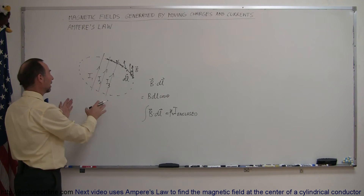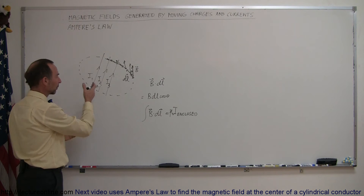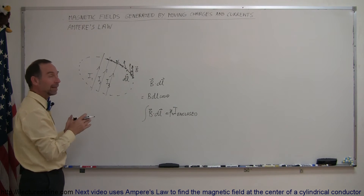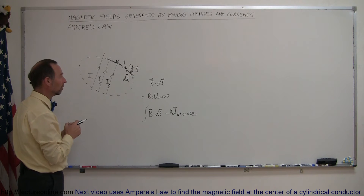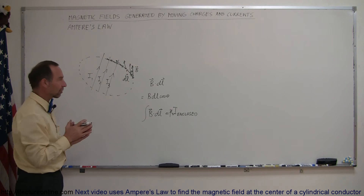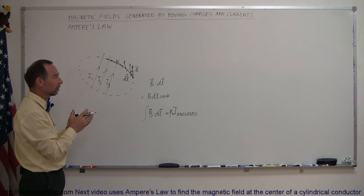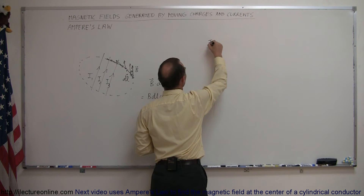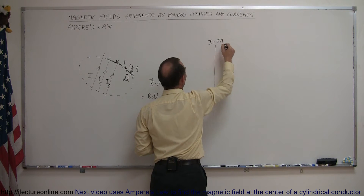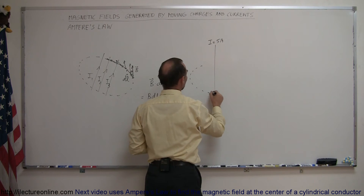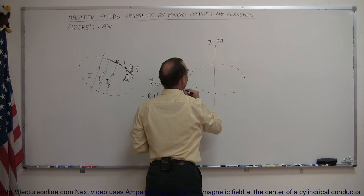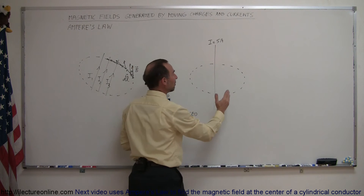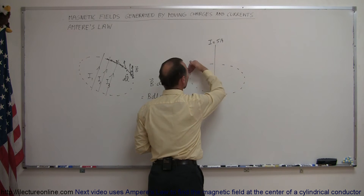Now, in a case where you have multiple current conductors having different currents, maybe pointing in different directions, that would be a difficult problem to solve. But if it's very symmetric — for example, if we have a single conductor — let's do the example where I is equal to 5 amps, and we drew a circle around it with the conductor right in the very center of that circle, then we know that the B field will be uniform anywhere along that circle.